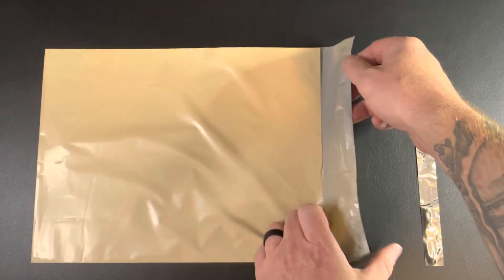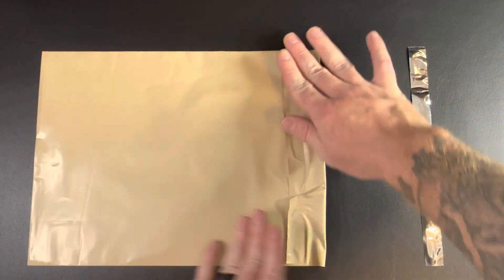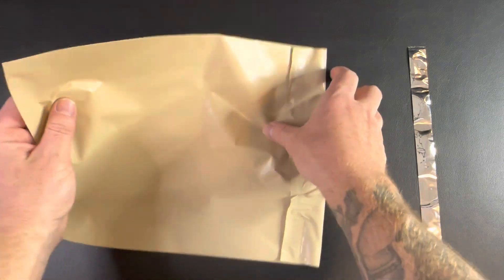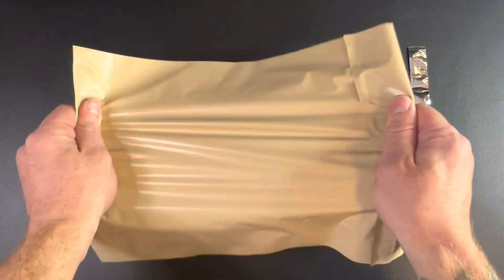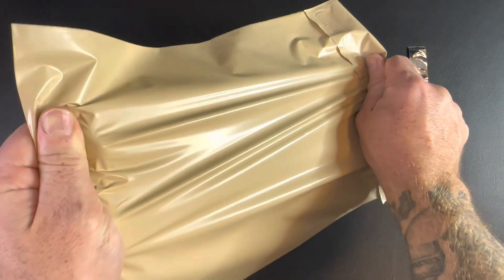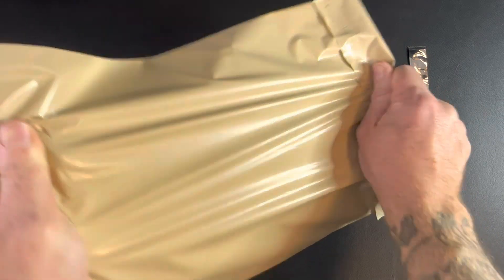These have a strong adhesive peel off label which you peel off, stick it down, and it holds very firmly. It will not open back up and also these poly mailers are extremely strong.